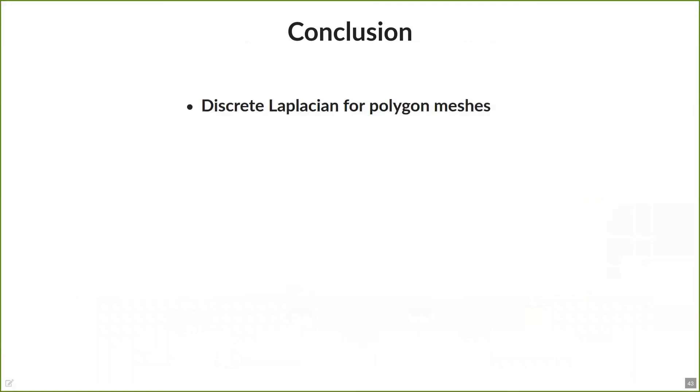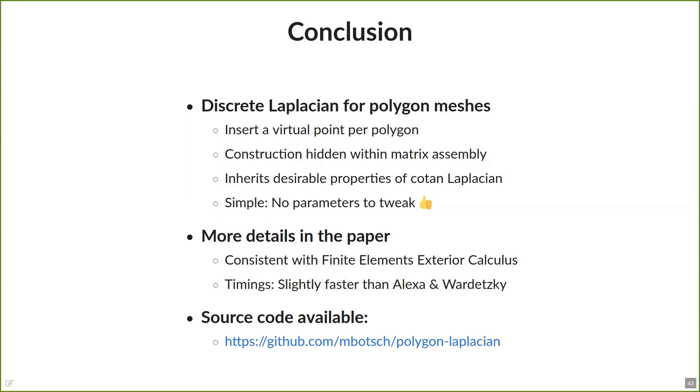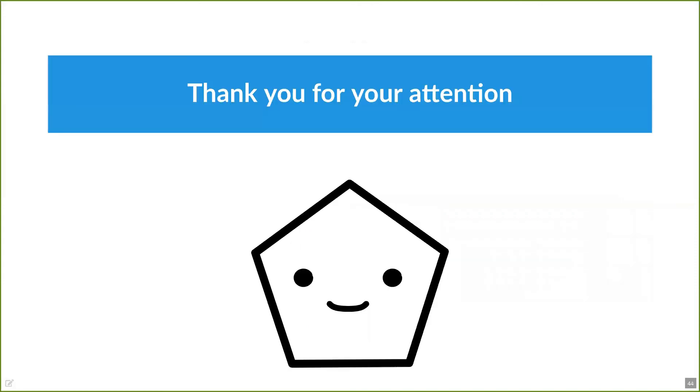To summarize this presentation, we were able to define a new discrete Laplacian for polygon meshes with the help of a virtual vertex per polygon. All the refinement steps are hidden from the user, thanks to our prolongation and restriction matrices. It inherits all the desirable properties of the cotangent Laplacian, is still easy to compute and has no parameters that have to be adjusted. An additional nice feature is that our theory is consistent with the finite elements exterior calculus. With the help of the Whitney basis functions, we are able to define a prolongation operator for 0, 1 and 2 forms, enabling us to define the respective Hodge star operators. Constructing our Laplacian is also faster than Alexa's state-of-the-art polygon Laplacian, which is a nice detail for real-world applications. So, if you want to try our new Laplacian, we published the source code on GitHub under the following link, and thank you for your attention.